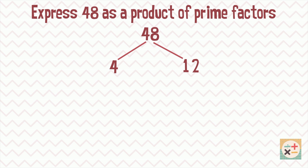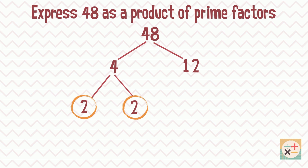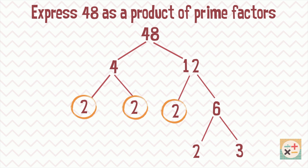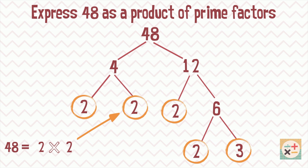Now repeat this for each of these factors. When we can't divide the factors any further, we circle it, as it is a prime number and therefore a prime factor. Once we cannot go any further with any of the branches, we have completed the factor tree and found all of the prime factors.